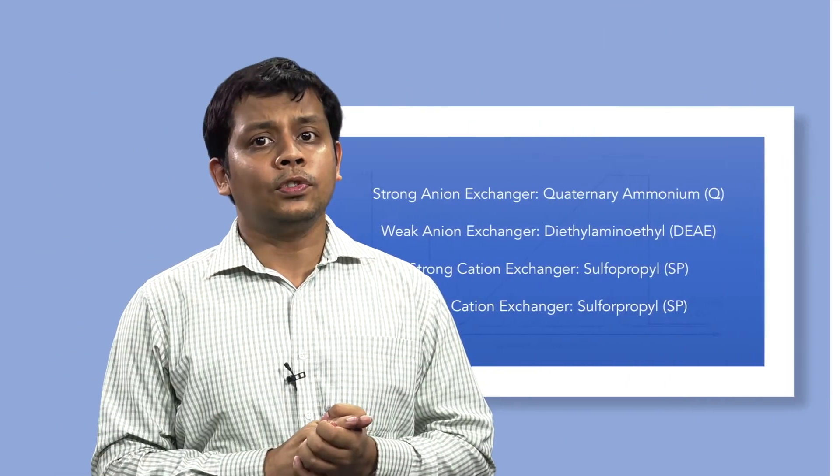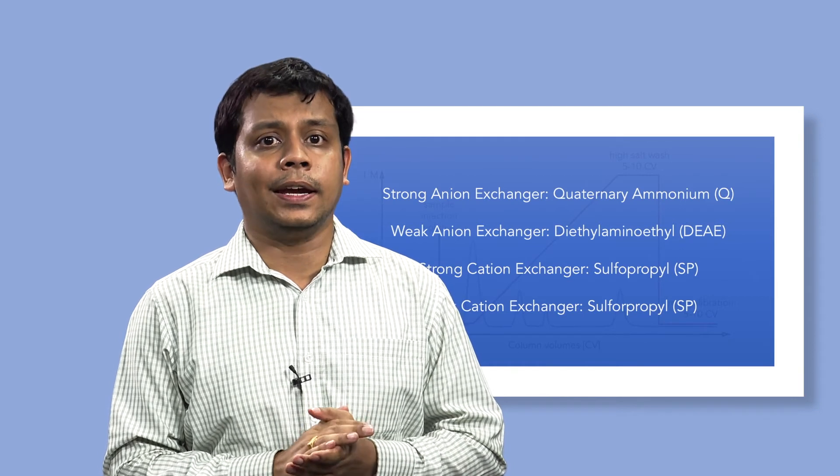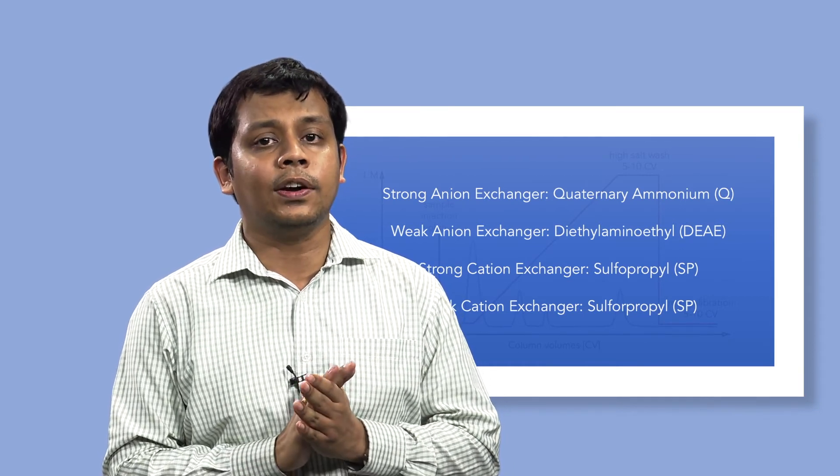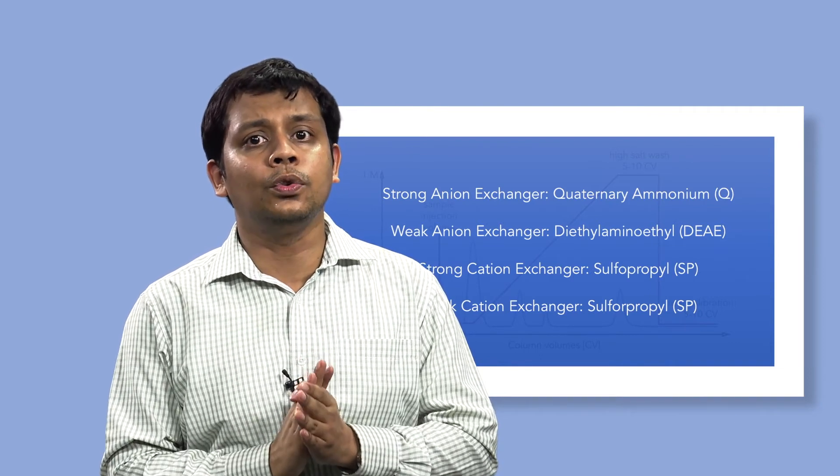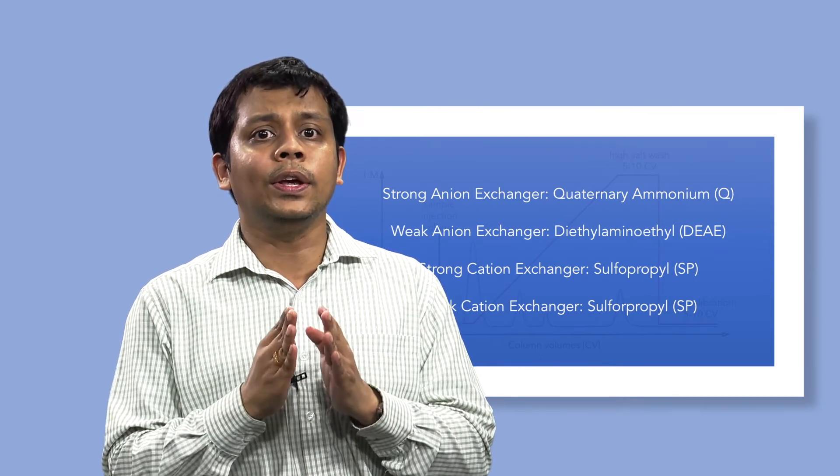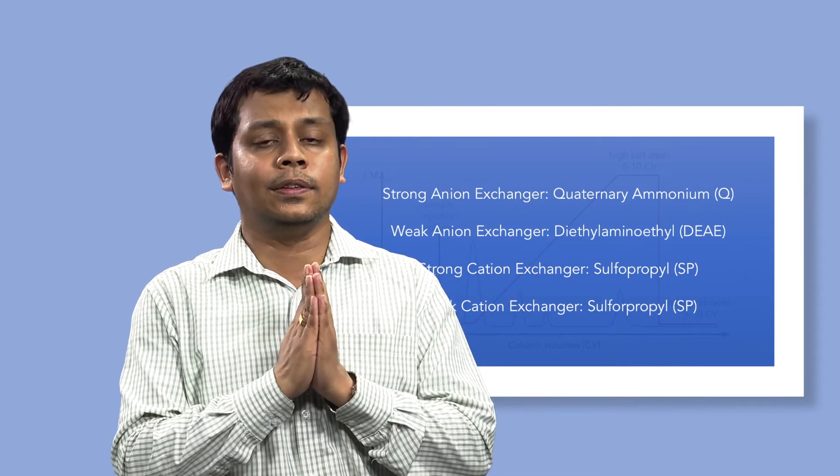The terms strong and weak refer to the extent that the ionization state of the functional groups varies with pH. The terms strong and weak do not refer to the strength with which the functional groups bind to the proteins.